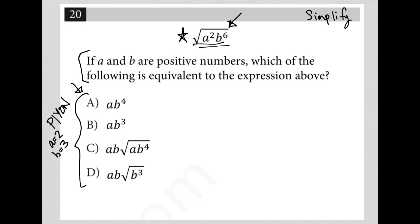But I think simplified is going to work out here. So, I have square root of A squared B to the 6. That's the same as the square root of A squared times the square root of B to the 6.